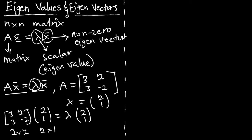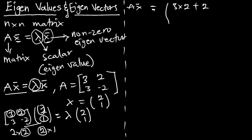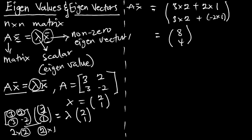We can multiply since the number of columns equals the number of rows. Performing this operation on the matrix-vector product: the first row gives 3×2 + 2×1, and the second row gives 3×2 + (−2)×1. This gives us [8, 4] for the matrix A multiplied by the eigenvector.